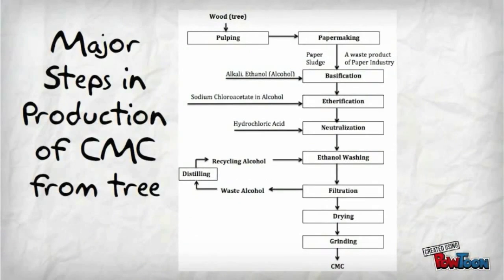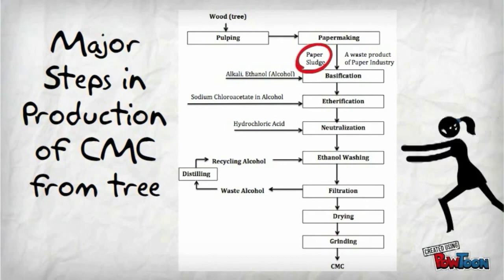CMC is manufactured using paper sludge, a waste product of the paper industry. Before using paper sludge, low-cost pretreatment is necessary to purify it because the mineral components and chemical additives present can reduce the efficiency of the process.